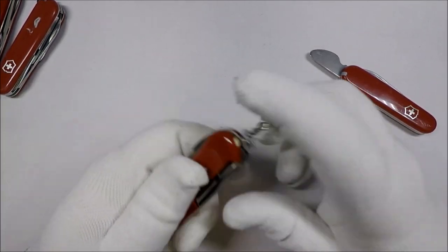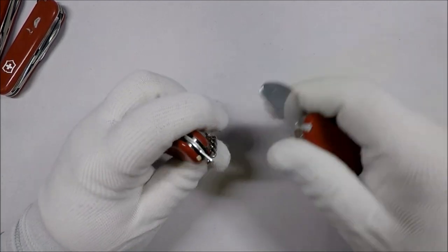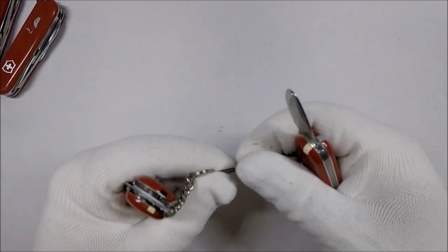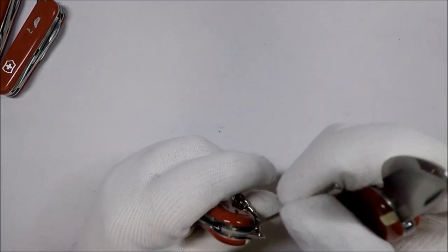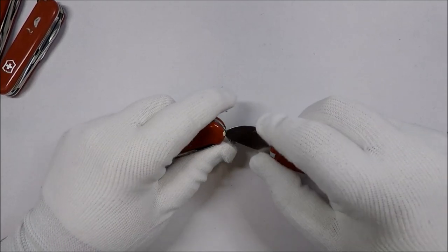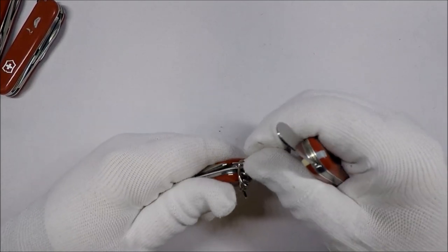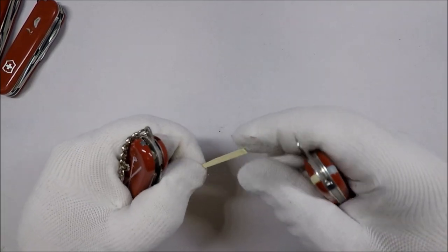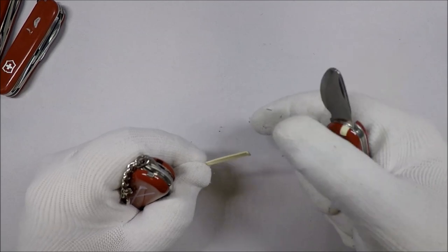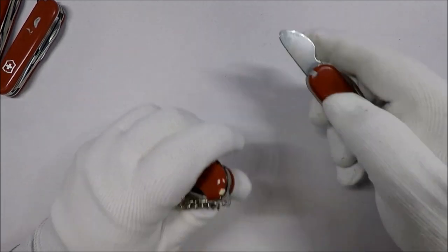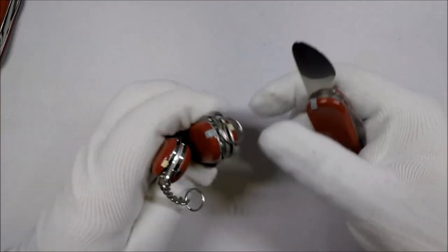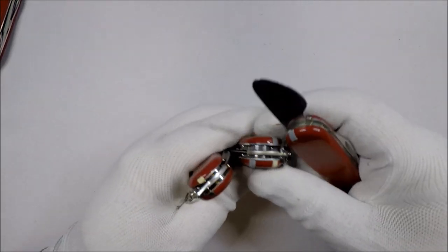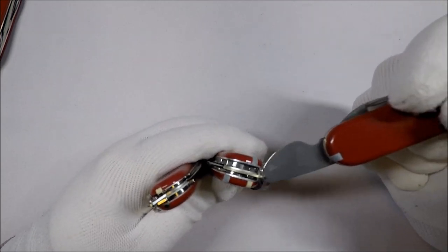The last tool on this, well, actually this one has tweezers and a toothpick, which is kind of interesting. The only difference is the toothpick's a little bit different shaped than the Victorinox. They're facing into the scales versus the Victorinox ones which face outwards. See, the Wengers face in, the Victorinox face out.